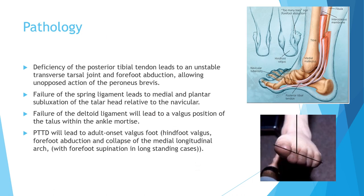The pathology of posterior tibial tendon dysfunction starts with the tibialis posterior muscle. There is a watershed area between the medial malleolus and the navicular, and the tendon takes a 90-degree curve. This results in possible loss of function, degeneration, and even rupture. As noted, this muscle is the primary inverter of the foot. When you lose inversion, there will be unopposed action of the peroneus brevis muscle.